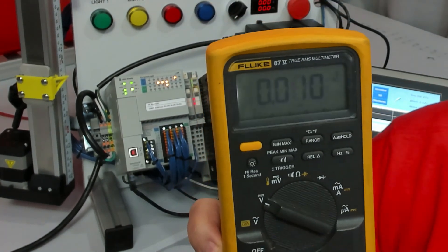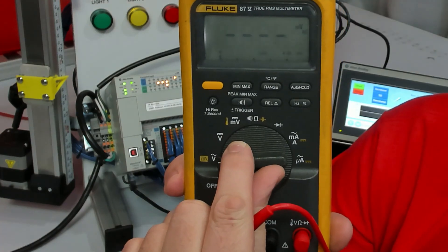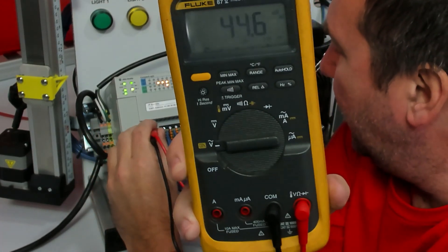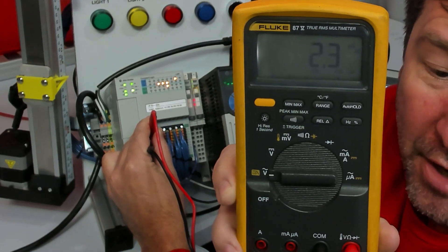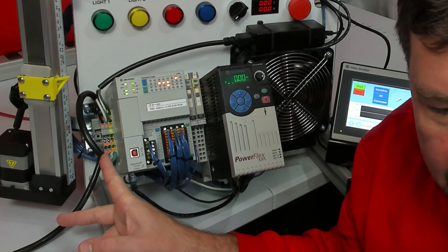Now let's talk about what happens if we're on the wrong one. Let's switch to volts AC and check it again. Now it appears we have no voltage.